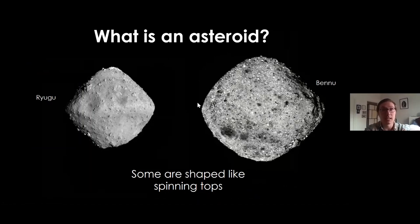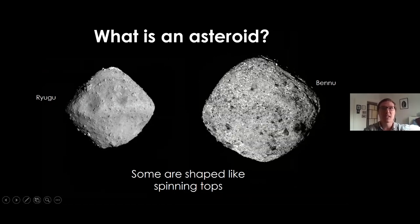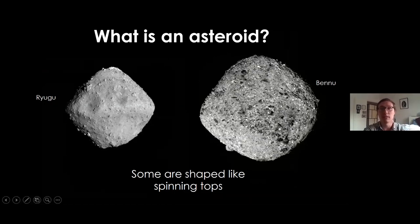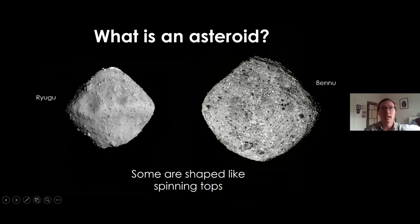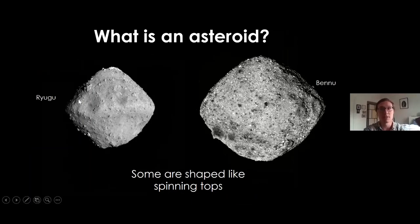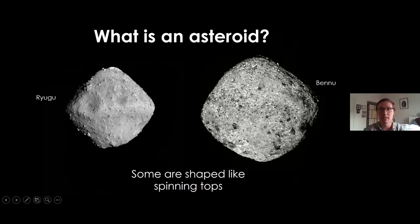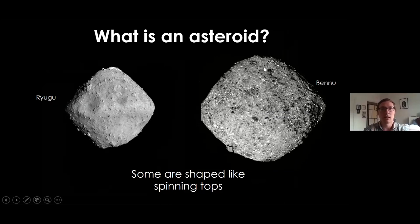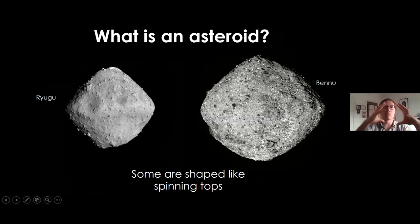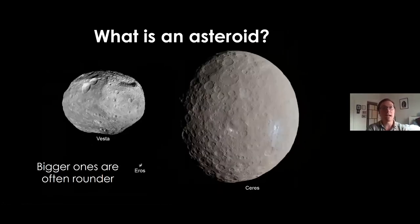They can also have this spinning top shape. These ones are thought to be rubble piles - whereas some asteroids might be monoliths, single big rocks, some are just piles of rocks. This is Ryugu and Bennu. Ryugu is about a kilometer across, Bennu about 500 meters. They don't necessarily have a single rock inside them - they're just a bunch of rocks together. As you get bigger, they often get rounder. You have Vesta here, which is more of a potato shape.